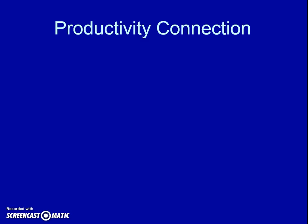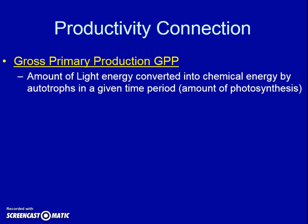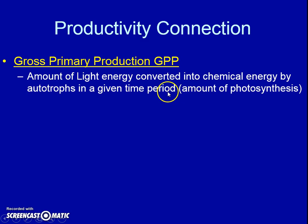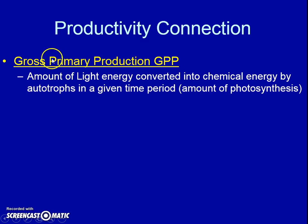Hopefully you noticed some connections to what you previously learned in productivity. These are terms from another set of notes, so you don't have to jot them all down. Gross primary productivity — GPP — is the productivity of plants: how much photosynthesis is happening, how much light energy is being converted to chemical energy like glucose by producers or autotrophs in a given time and area. For instance, a rainforest or farmland is way more productive than a desert.